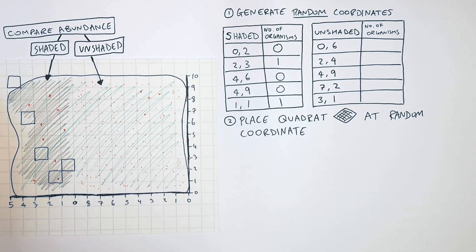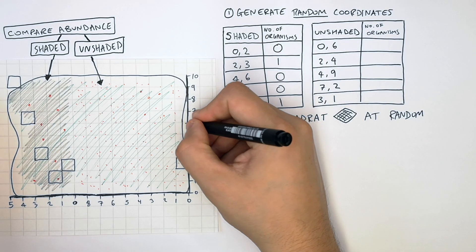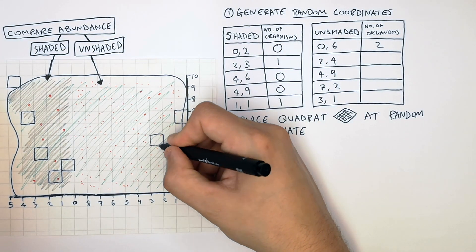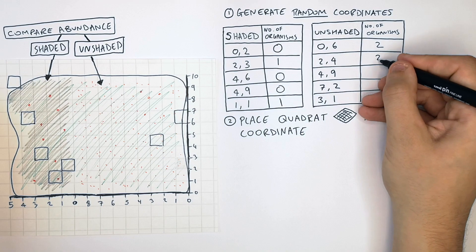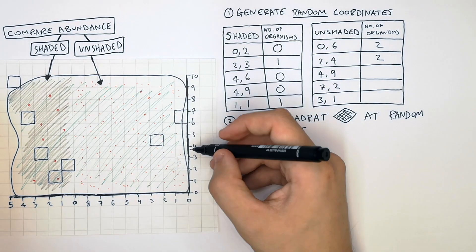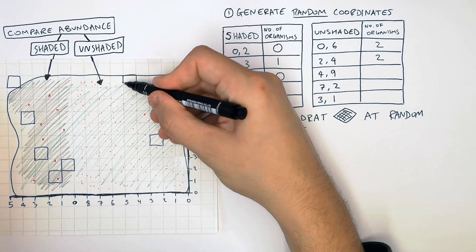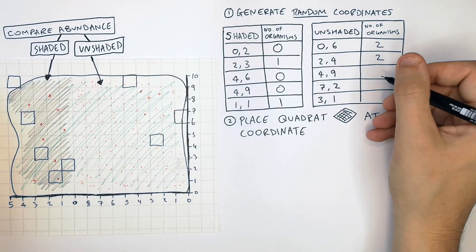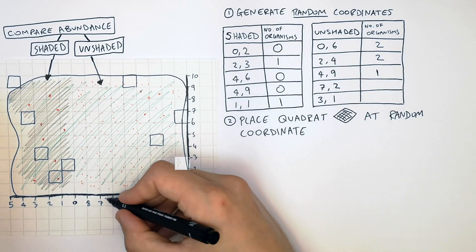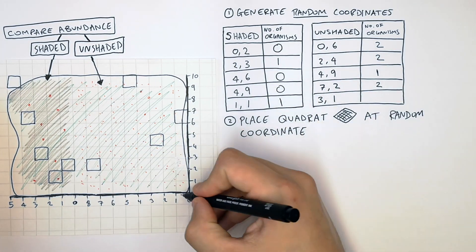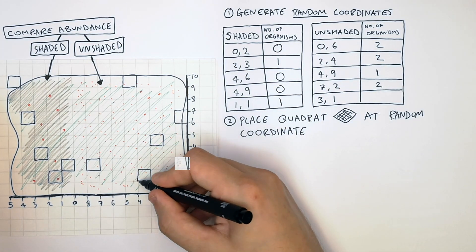You then repeat the process for the unshaded area. In the first quadrat there are 2 plants. In the second there are also 2 plants. In the third quadrat there is 1 plant. In the fourth quadrat there are 2 plants. And in the final quadrat there are also 2 plants.